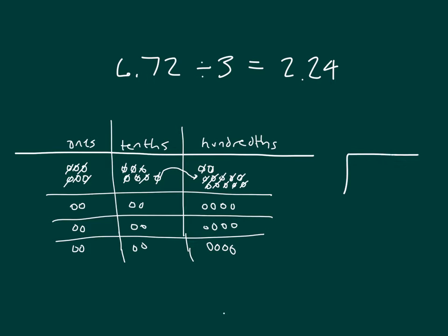My written method: 6.72 divided by 3. 3 goes into 6 two whole times because 2 times 3 is 6. 6 minus 6 is 0. Bring down the 7. 7 divided by 3 is 2 because 2 times 3 is 6. 7 minus 6 is 1. Bring down the 2. 12 divided by 3 is 4. Here's my decimal point and the rest of my work there.